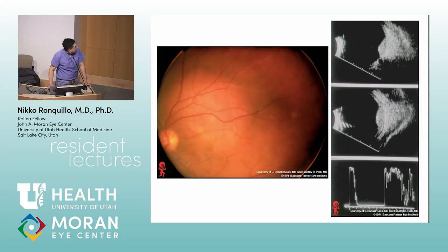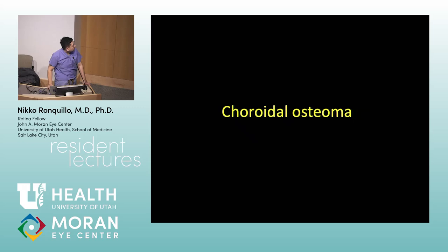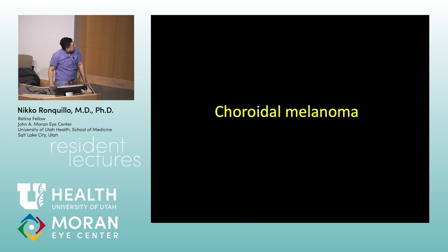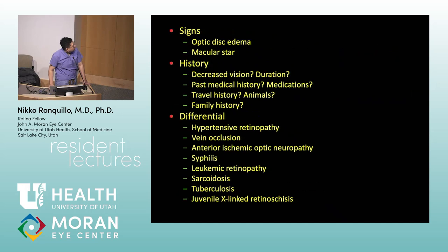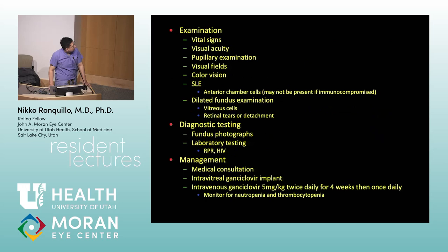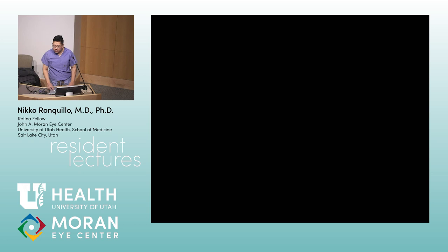Choroidal hemangioma: on ultrasound, high reflectivity. This is important — choroidal hemangioma shows high reflectivity, while melanoma shows low to mid reflectivity. That distinction is the key point. Next — choroidal melanoma, followed by choroidal metastases.